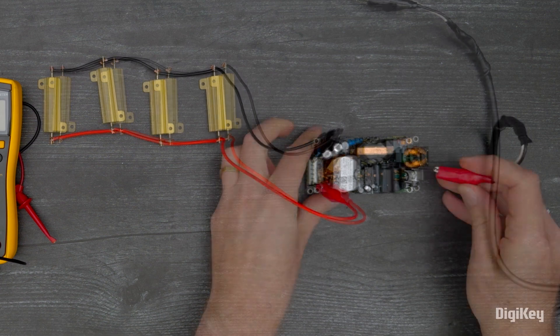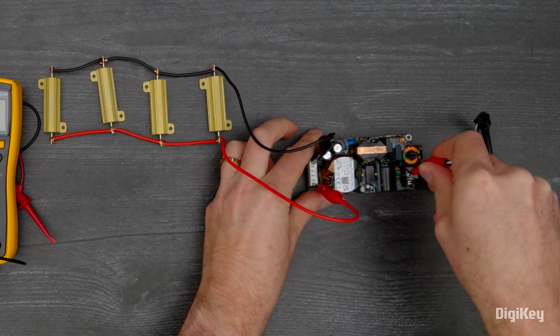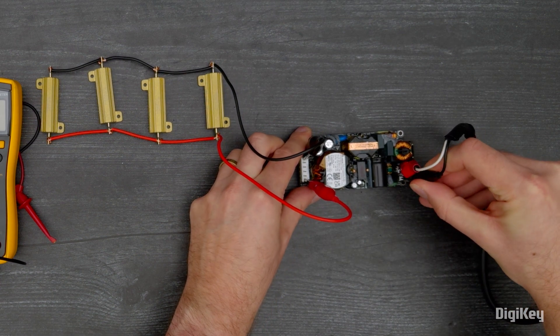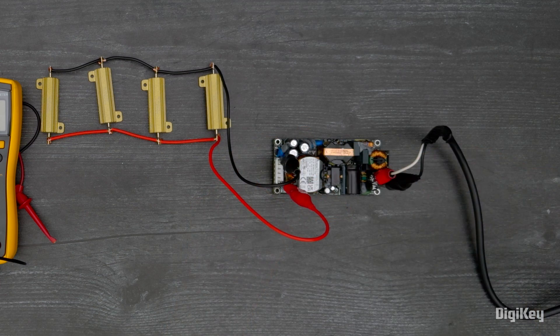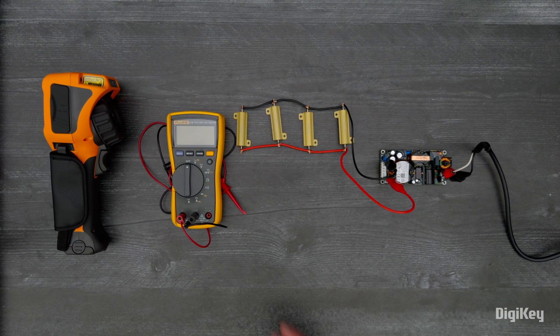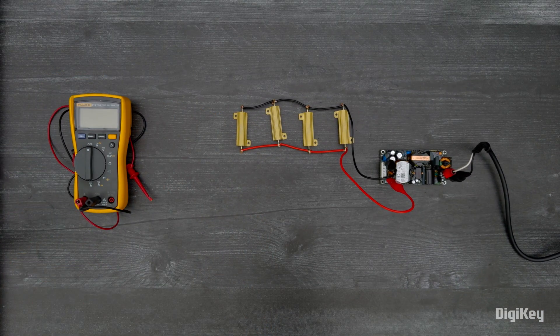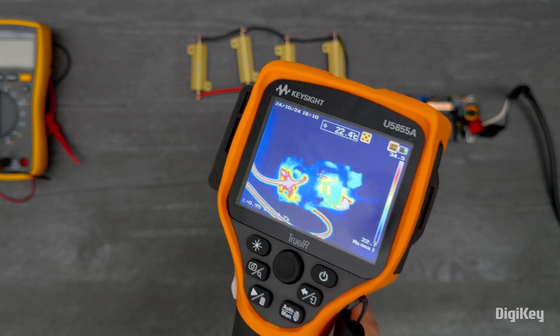Then with power off, connect a 120 volt input to pins one and two on the input connector. Now turn on the input supply and observe the power supply efficiency with thermal imaging.